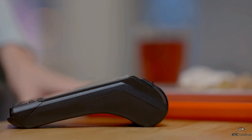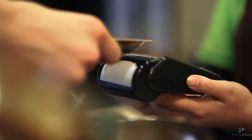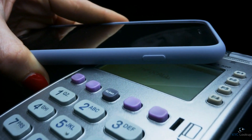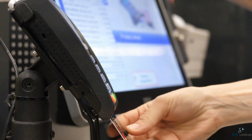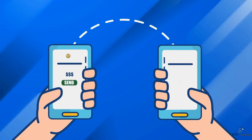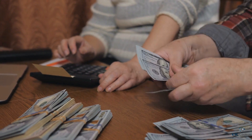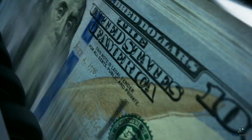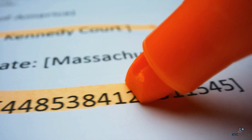Automated Clearinghouse, or ACH, and wire transfers. ACH transfers are used for recurring payments such as utility bills, mortgage payments, and insurance premiums. They are typically processed in batches and can take a few days to clear. Wire transfers, on the other hand, are used for urgent or high-value payments such as international transfers or large business transactions. They are processed instantly and can be more expensive than ACH transfers.